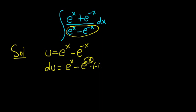That's the chain rule, right? So it's the derivative of e to the negative x, which is e to the negative x times the derivative of the inside, which is negative 1, dx. Negative and negative is positive, so we get du equals e to the x plus e to the negative x dx.